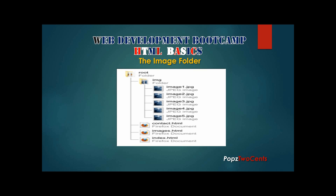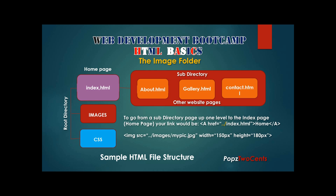You can notice that the contact information, the images, and the index are all on the root. The home page, index, images, and CSS folders are on the root directory. A subdirectory contains other website pages — in this case, the About, Gallery, and Contact pages. The Gallery can have other subdirectories by content. Notice that if we wish to go from About back to the index, we use the anchor tag with dot-dot-slash, which tells the browser to go back one level to index.html.